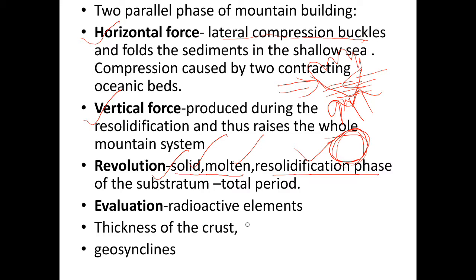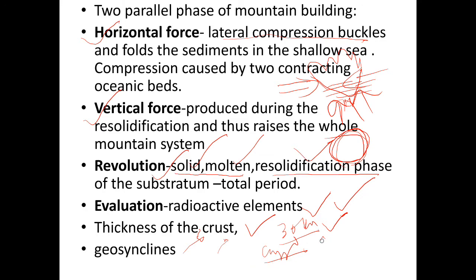The evaluation of this theory highlights several limitations. The distribution of radioactive elements at different depths is very little known. The proposed crust thickness of only 30 kilometers is not accepted by many scholars. The cyclic and regular pattern of mountain building cannot be accepted, as scientists cannot accept a regular concept of this process. The idea that geosynclines are always formed by submergence of continental margins due to transgression of seas is also not accepted by many scientists.